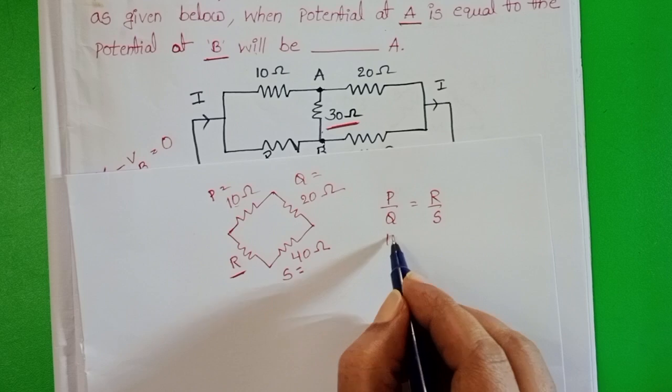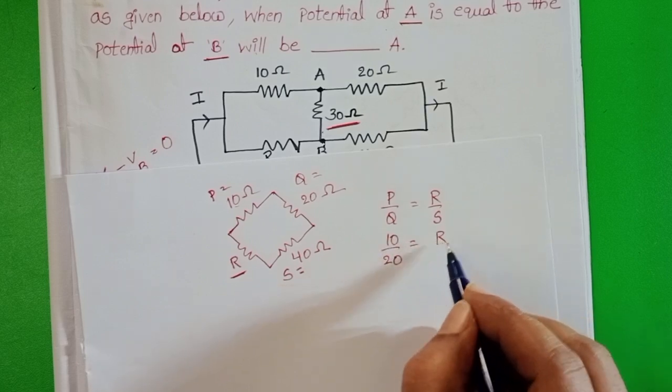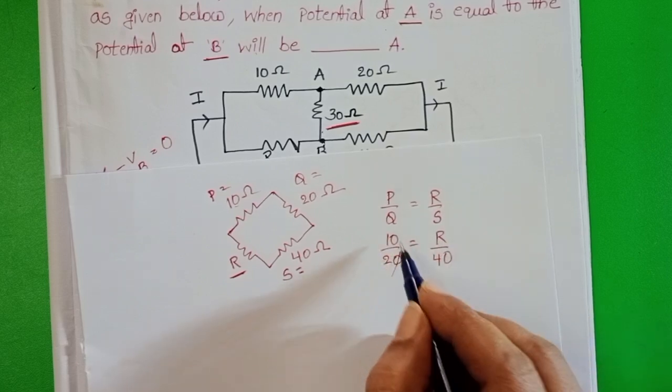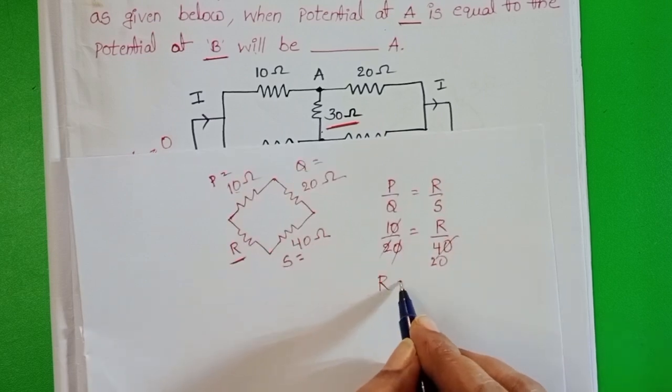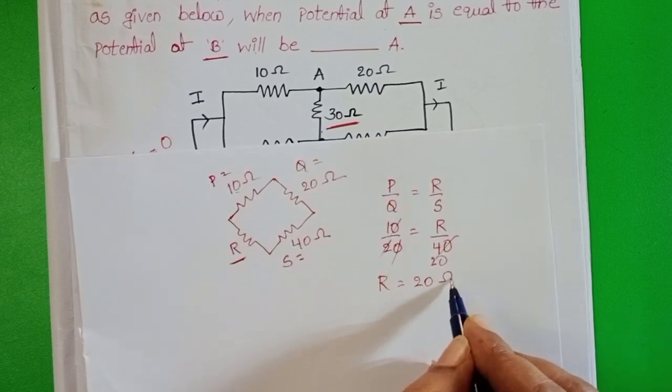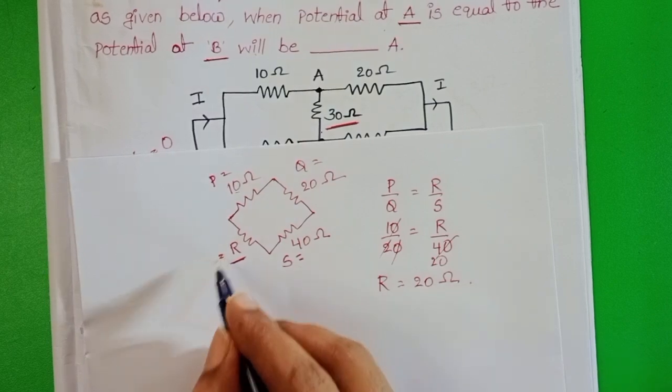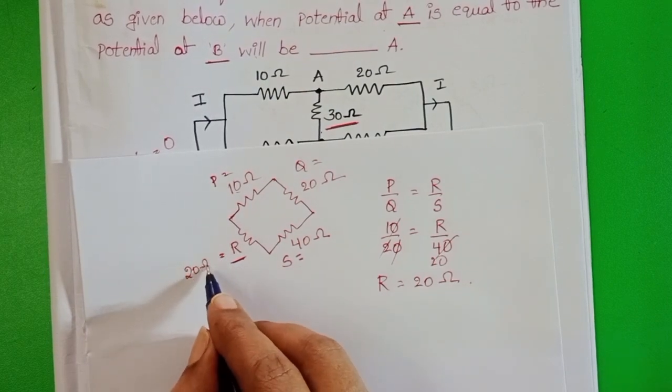10 by 20 equals R by 40. Zero gets cancelled, two ones, two twenties. Unknown resistor of resistance equals 20 ohms. Now find out the equivalent resistance of the circuit.